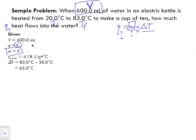We've got our c value here for water, which is our given. Our delta T is 85 degrees Celsius subtracted by 20 degrees Celsius, which will give us a total of 65 degrees Celsius.